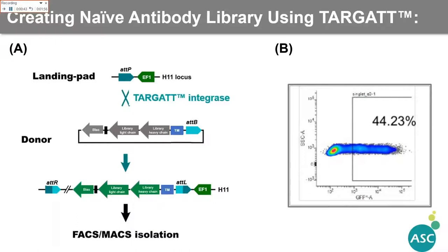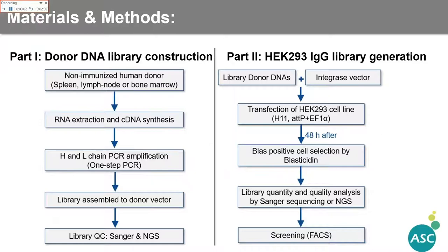The overall procedure contains two parts. The first part is donor DNA library construction, starting from non-immunized human donor preparation and PCR amplification to the final library QC. The second part contains transfection of the HEK cells using the library donor DNAs, followed by drug selection until the final step of library QC for screening of antigens.